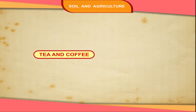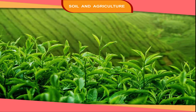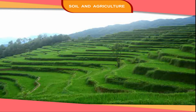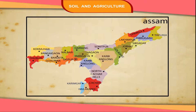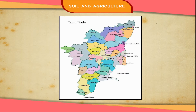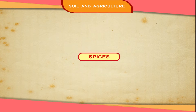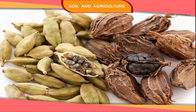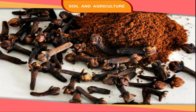Tea is grown in hot rainy climate and on sloping land. The main producer of tea is Assam. It is also grown in West Bengal and Tamil Nadu.